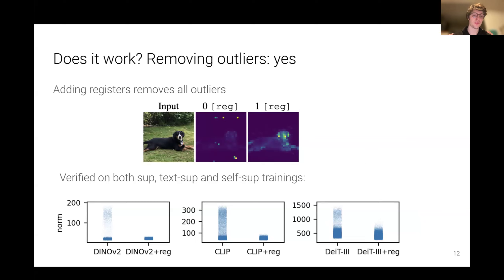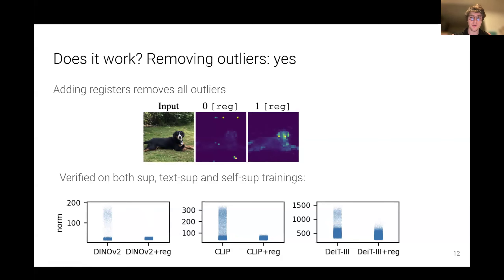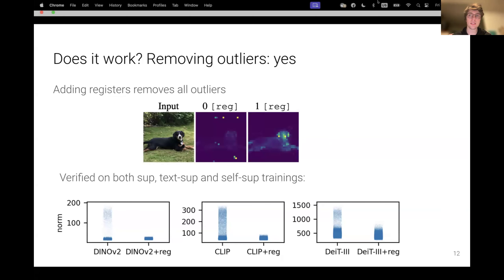We verify this on a few different training paradigms: supervised, text-supervised, and self-supervised. DINOv2 is a strong self-supervised training paradigm; CLIP is text-supervised; and DeiT is a supervised classification method. When we add registers, the distribution of patch token norms — where outliers indicate artifacts — shows none of those outliers anymore, meaning we've fixed the attention maps. This is the case for all three models, so this fix is pretty robust and universal across training paradigms.